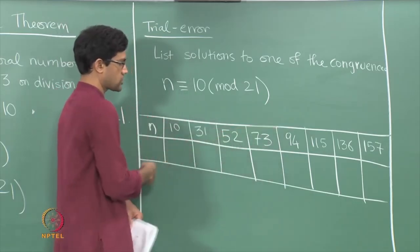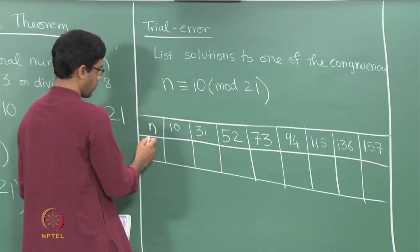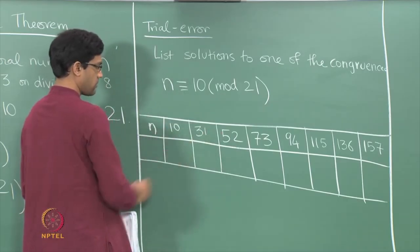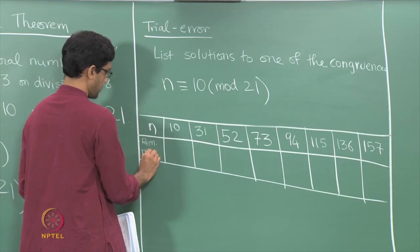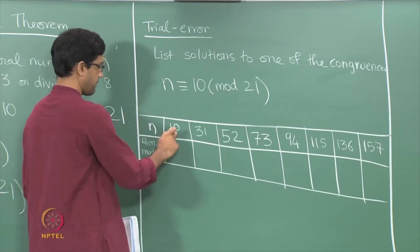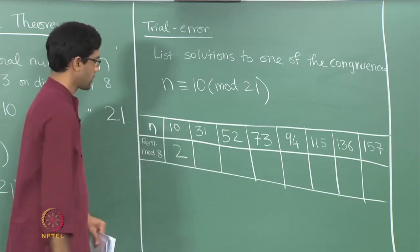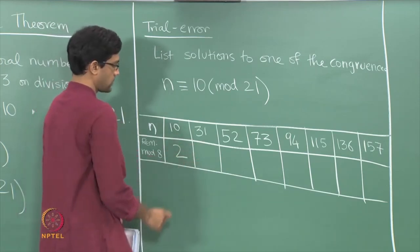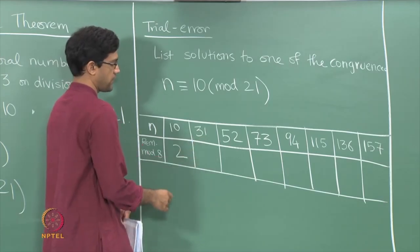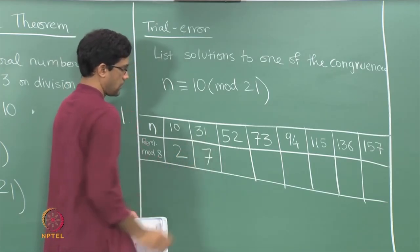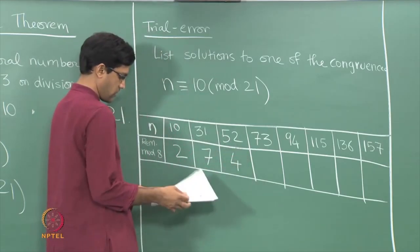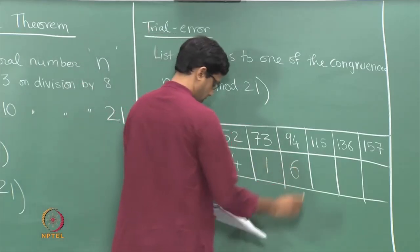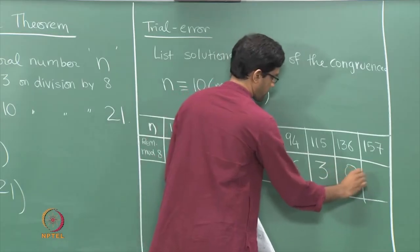This list of numbers solves the first congruence. Now let us figure out what remainders these numbers give when divided by 8. Dividing 10 by 8 gives remainder 2; dividing 31 by 8 gives remainder 7 (since 24 is the nearest multiple of 8); 52 gives remainder 4. The next remainders are 1, 6, 3, 0, and 5.